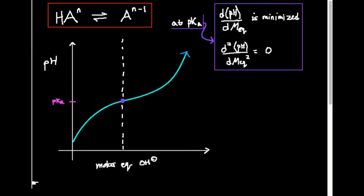In the next video, we're actually going to look at some Excel data and mathematically determine where the pKa is for a weak acid during a titration. When we have diprotic and triprotic acids, we're going to do exactly the same thing, except we'll need to break the titration curve into different regions and apply this analysis to each region.